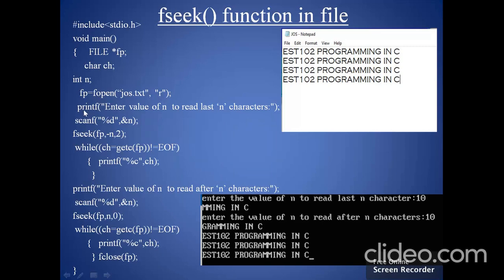After that, we will call the fopen function for opening the already-created 'jos' file, and here the mode is read mode. Then we will call printf with the statement 'enter the value of n to read last n characters'. That statement will be printed on the console. The value we enter is 10, and with the help of scanf, that value will be stored inside variable n. Then we will call the fseek function: fseek(fp, -n, 2);